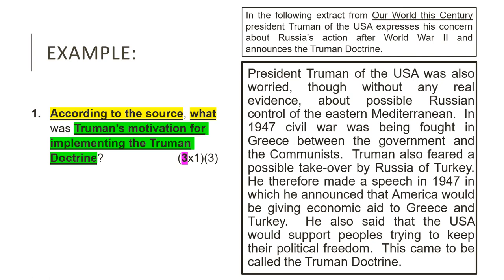Remember, the skill that Level 1 teaches you is to extract evidence from a source, which means you always have to quote your answer. But before we go and look for the evidence in the source, we need to understand what the question is actually asking us to quote so that we don't end up quoting incorrect information. This question is asking us to quote something which tells us what Truman's motivation was for implementing the Truman Doctrine — in other words, why did Truman implement it? The mark allocation is 3 times 1, which means we are going to quote three reasons for the Truman Doctrine.